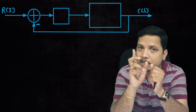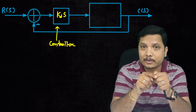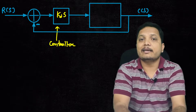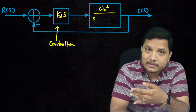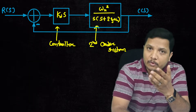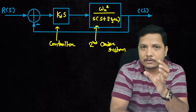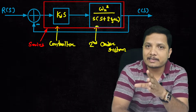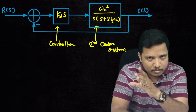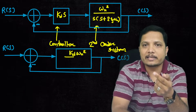Let us understand this using a second-order system. Here I have shown a control system with a second-order plant, where the controller portion is the derivative controller with transfer function Kd · s in the frequency domain. The standard second-order system is ωn² / [s(s + 2ζωn)]. These two blocks are in series, so multiplying them gives Kd · ωn² / (s + 2ζωn).